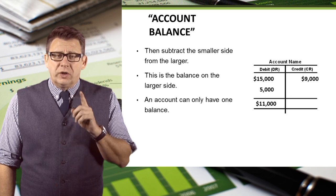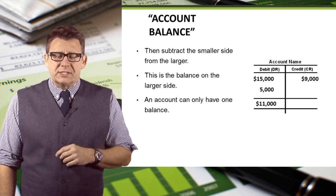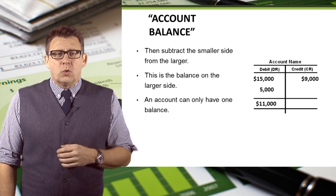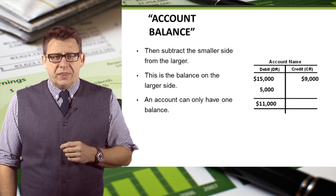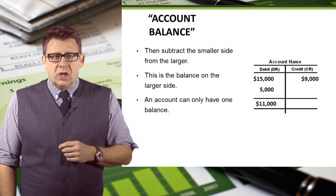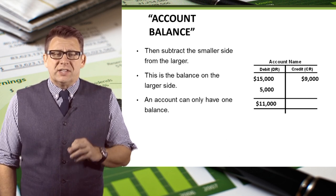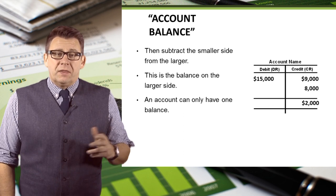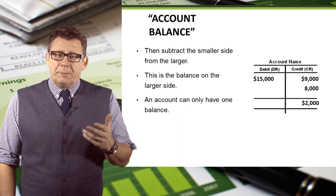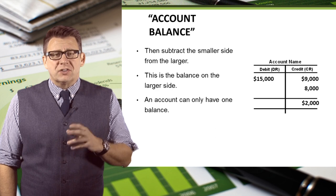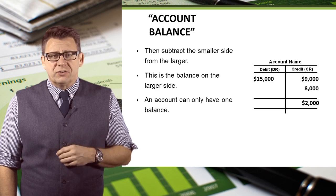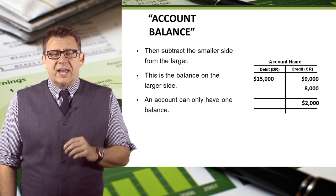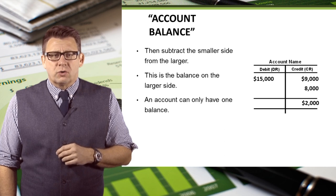An account can have only one balance. In this example, debits are $20,000 and credits are $9,000, so the balance in this account is an $11,000 debit. In this example, debits are $15,000 and credits are $17,000, so the balance in this account is a $2,000 credit.